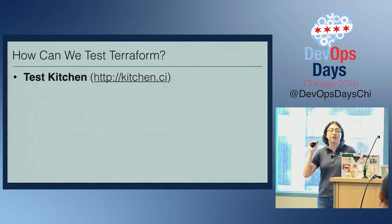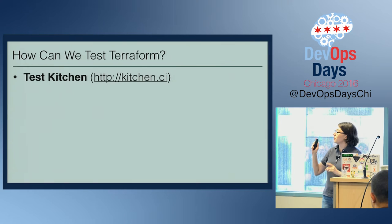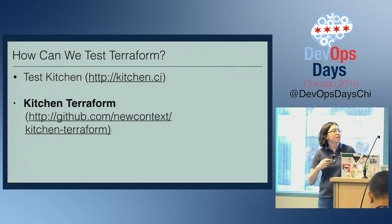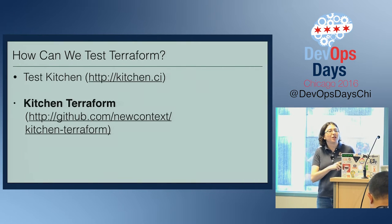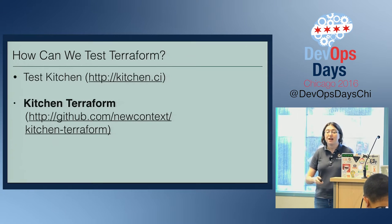In order to use Test Kitchen with Terraform, we're going to use a special provisioner called Kitchen Terraform, which just came out in the last month, from a company called New Context. We need this provisioner to provision new AWS EC2 instances with Terraform, and also to SSH into those instances and run our tests. You can find it at github.com/newcontext/kitchen-terraform.